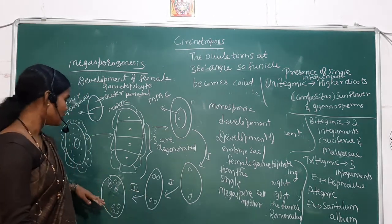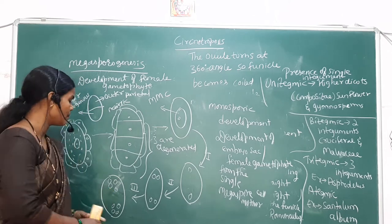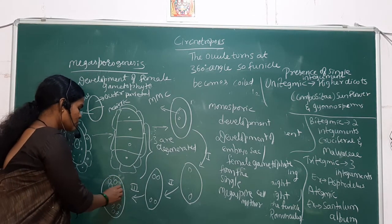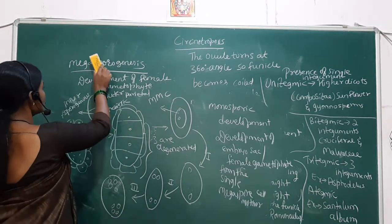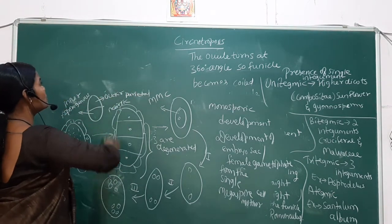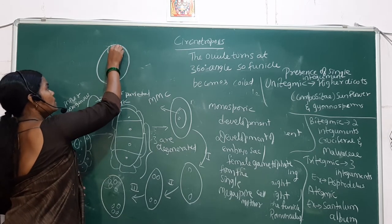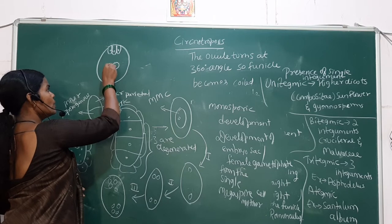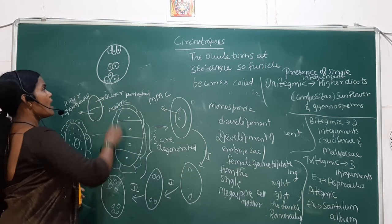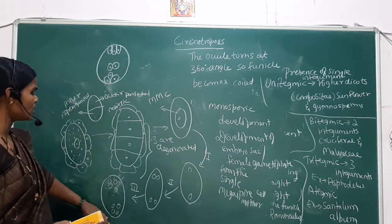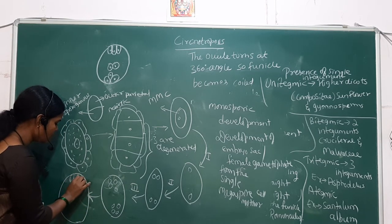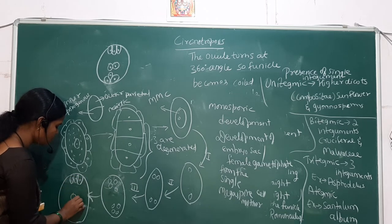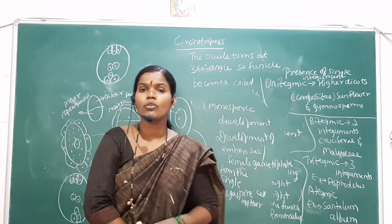After the formation of the eight daughter cells, cell wall formation occurs to each cell. Then they arrange themselves: three antipodal cells are arranged towards the chalaza side, two central cells are present at the center of the embryo sac, and three cells go towards the micropyle region.